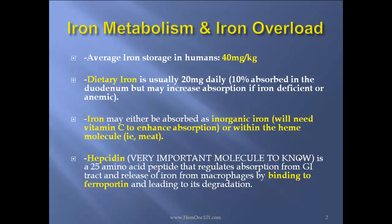Average iron storage in humans is 40 milligrams per kilogram. Dietary iron is usually 20 milligrams daily, with 10% absorbed in the duodenum, but absorption may increase if iron deficient or anemic. Iron may be absorbed as inorganic iron, which needs vitamin C to enhance absorption, or within the heme molecule, such as in meat.